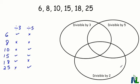Venn diagrams can also be used for sorting by three divisibility rules. Here, I've added divisibility by two. All we need to do here is extend our organizer to cover divisibility by two.